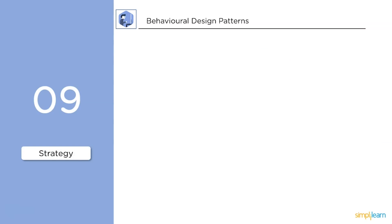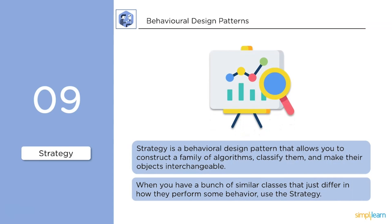Strategy is a behavioral design pattern that allows you to construct a family of algorithms, classify them, and make the objects interchangeable. We use the Strategy pattern when you have a bunch of similar classes that differ only in how they perform some behavior.